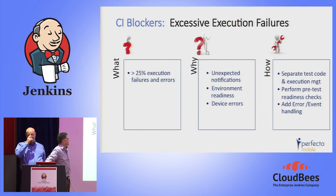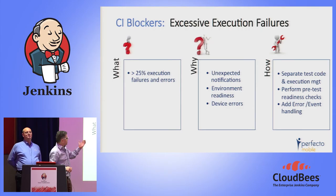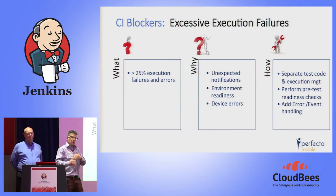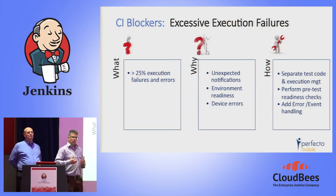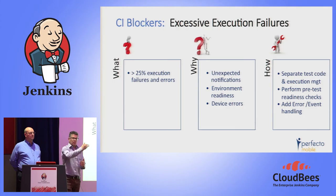Another segment of CI blockers is around execution. More than 25% of execution failures and errors are due to unexpected notifications, environment readiness issues, and device errors. When you develop test automation and test only within the application — even cross-platform — but ignore the broader environment, that's one step toward failure in test execution automation, because mobile has many surprises: notifications, incoming events, and so forth.